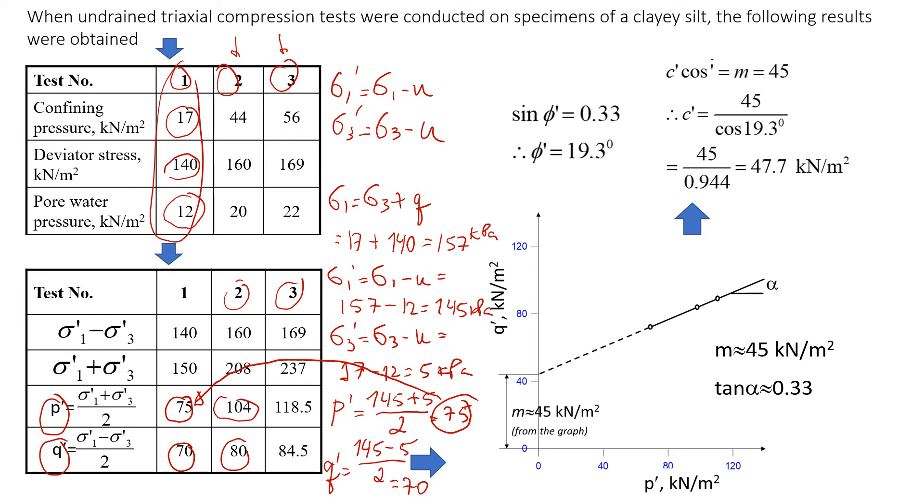Or what you can also do, you just take the deviator stress, which is sigma 1 minus sigma 3, and divide it by 2. You're going to get 70.